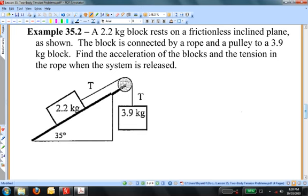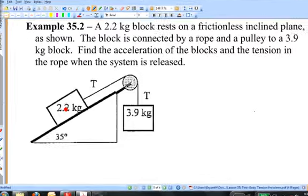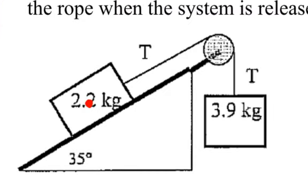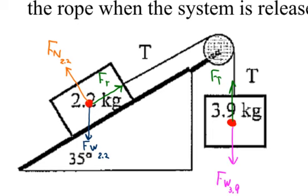Let's sketch a free body diagram for each of the objects. Starting with the 2.2 kilogram object, there are three forces acting on it: its weight, the string tension, and the normal force due to the inclined plane. On the 3.9 kilogram object, there are two forces: the weight and the string tension.